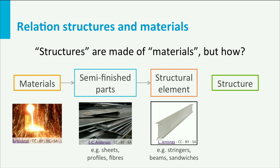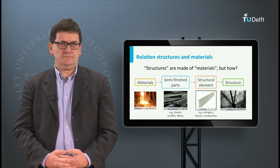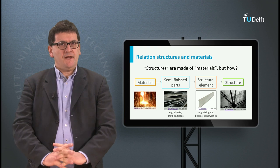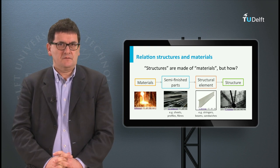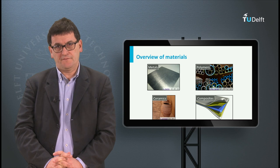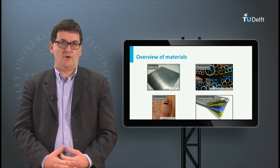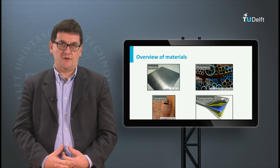These semi-finished products or half-fabricates can be further processed into structural elements like beams. A metal sheet for example can be cut and formed into a C-frame. Once we have structural elements, joining these elements together gives us a structure. Today there are many materials. Structural materials can be classified into four main groups: metals, polymers, ceramics and composites.